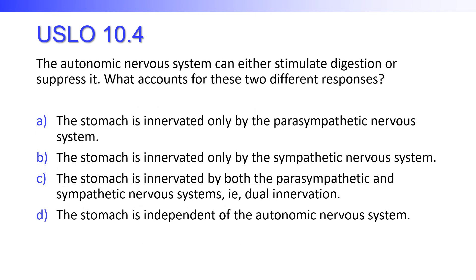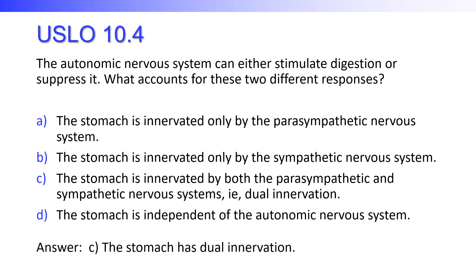The autonomic nervous system can either stimulate digestion or suppress it. What accounts for these two different responses? Is the stomach innervated only by the parasympathetic, only by the sympathetic, by both — called dual innervation — or is it independent of the autonomic nervous system? The stomach has dual innervation from the autonomic nervous system, and one branch will activate it while the other will sedate it.